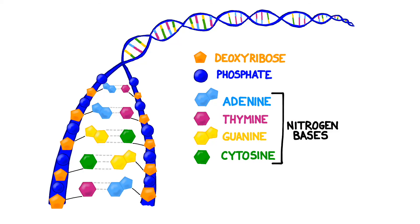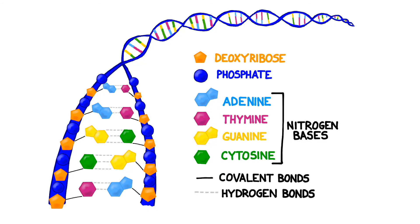Most of the molecule is held together with covalent bonds, and the base pairs are held together by hydrogen bonds. The order of the millions and millions of nitrogen bases determines the genetic code.